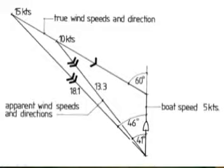If, then, the speed of the wind suddenly increases to 15 knots, but the direction does not change, then the apparent wind becomes 18.1 knots.